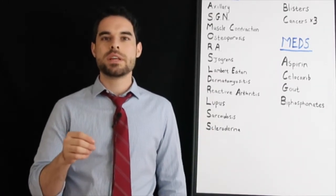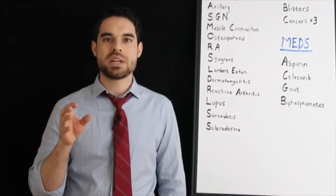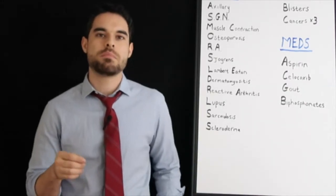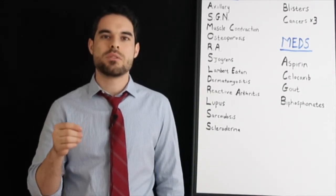Next is a superior gluteal nerve injury. This is responsible for the Trendelenburg presentation where you lean on the side of the injury and you'd want to give a nerve block in the superomedial quadrant.